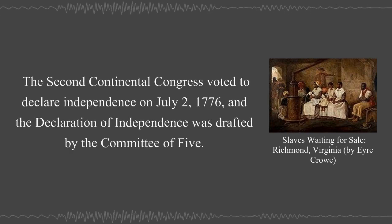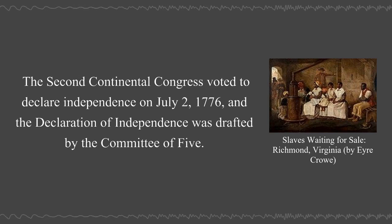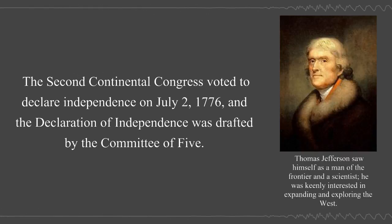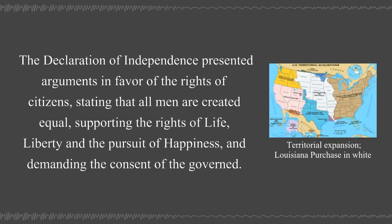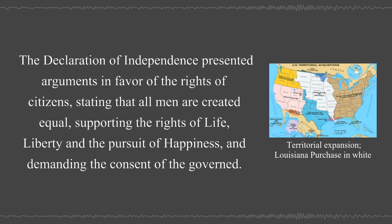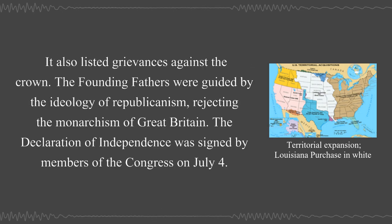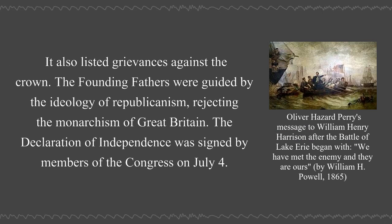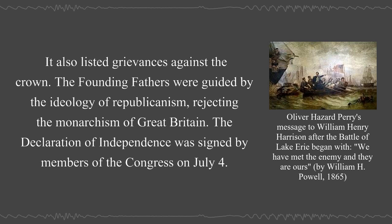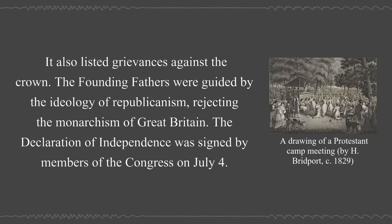The Second Continental Congress voted to declare independence on July 2, 1776, and the Declaration of Independence was drafted by the Committee of Five. The Declaration presented arguments in favor of the rights of citizens, stating that all men are created equal, supporting the rights of life, liberty, and the pursuit of happiness, and demanding the consent of the governed. It also listed grievances against the crown. The Founding Fathers were guided by the ideology of republicanism, rejecting the monarchism of Great Britain. The Declaration of Independence was signed by members of the Congress on July 4, a date since commemorated as Independence Day.